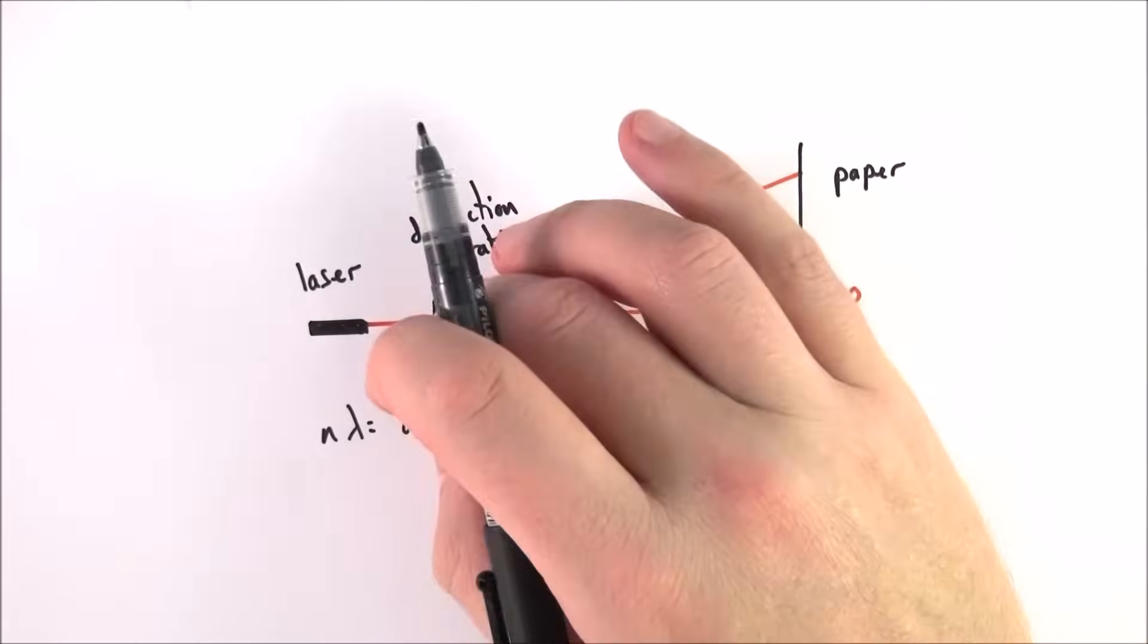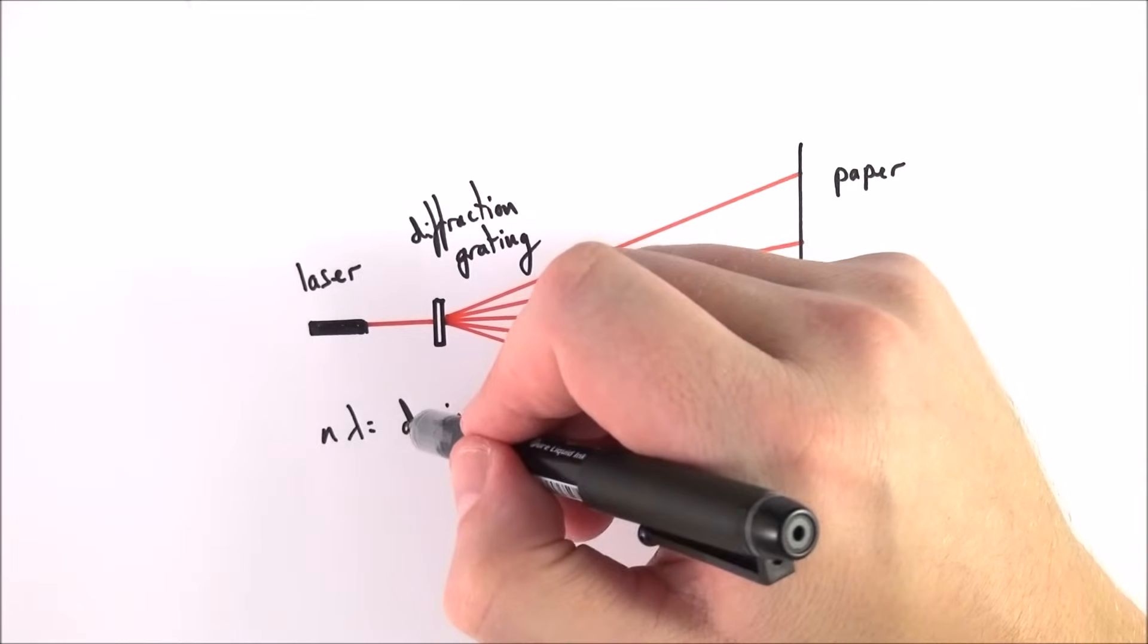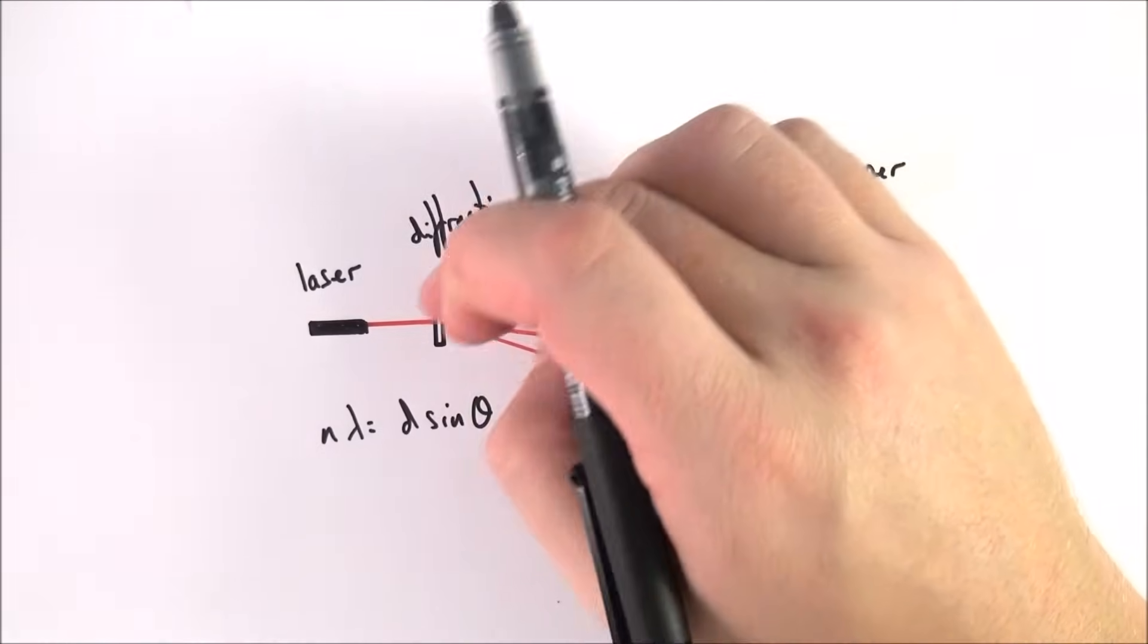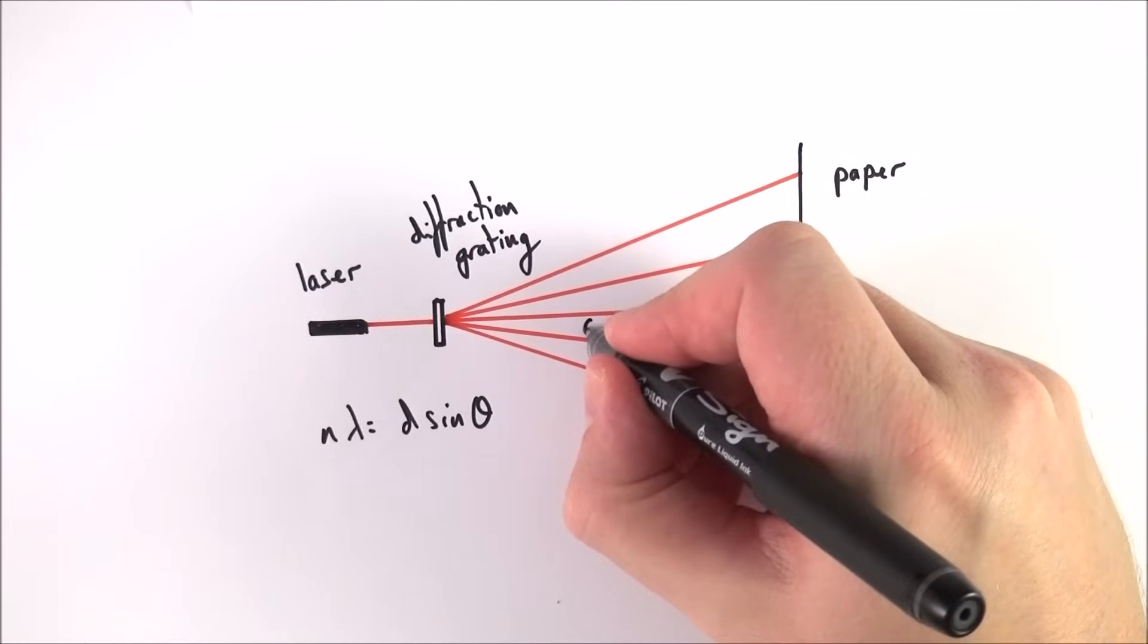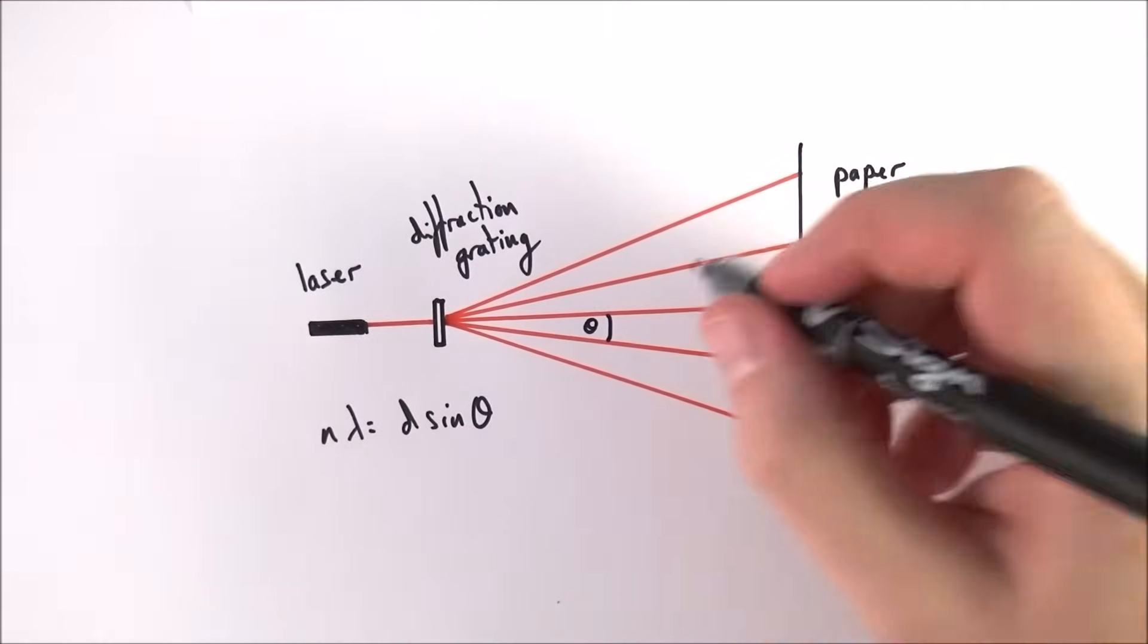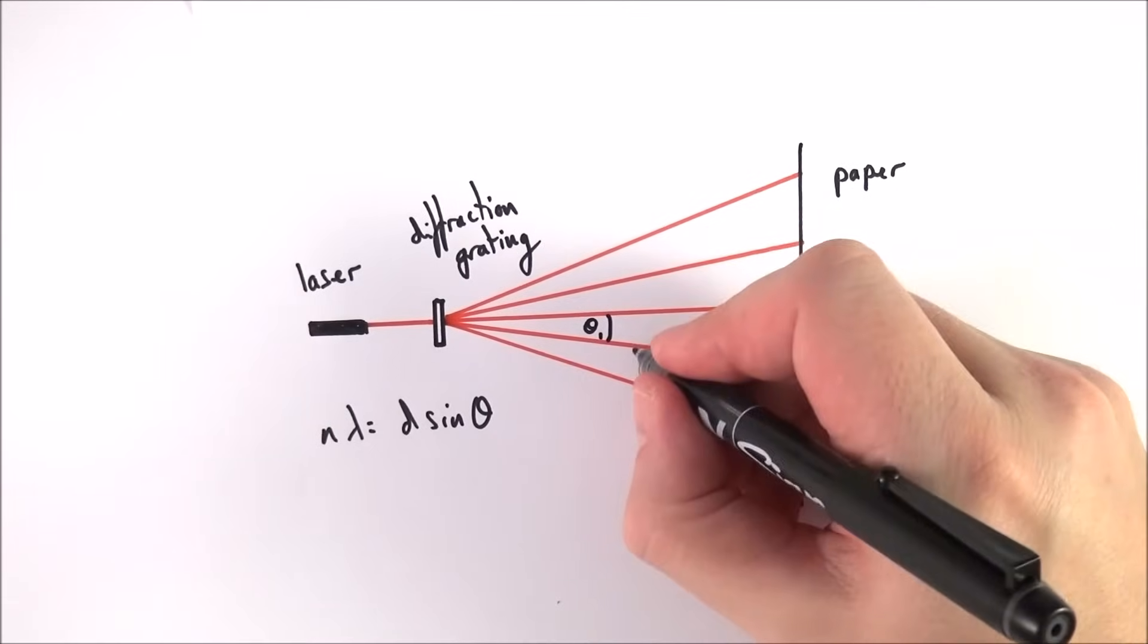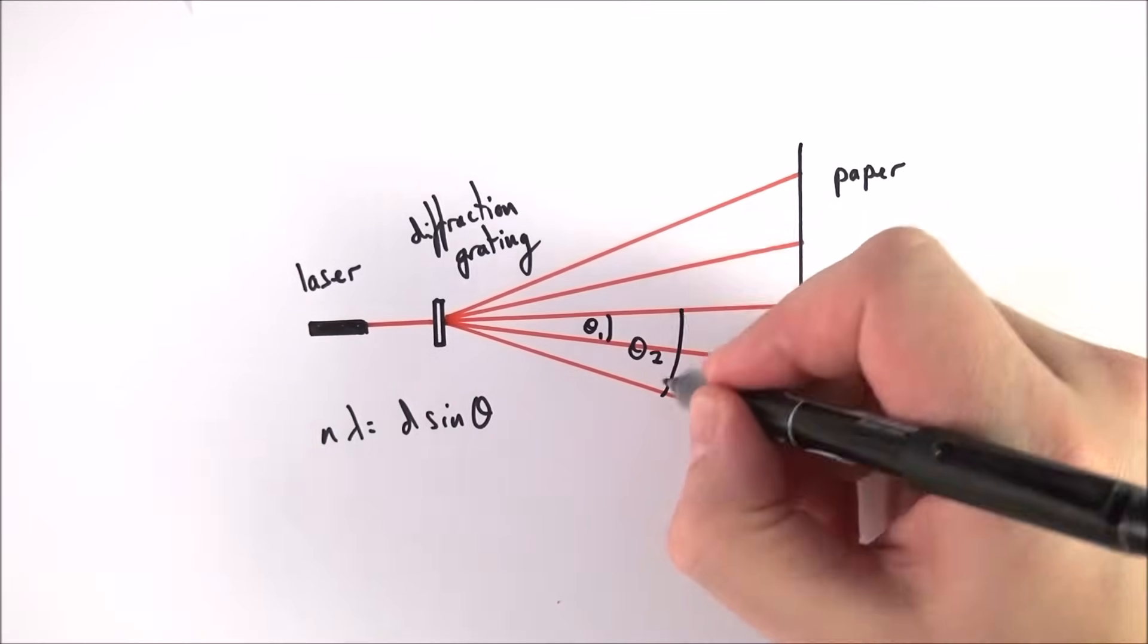D is the distance between the gratings on that diffraction grating. You've got to remember that often this tells you how many lines per millimeter, but we want to have our distance in meters. And then theta is the angle between the zeroth order and the order of the bright spot we're looking at. So what we might have is theta one there, and then theta two over here.